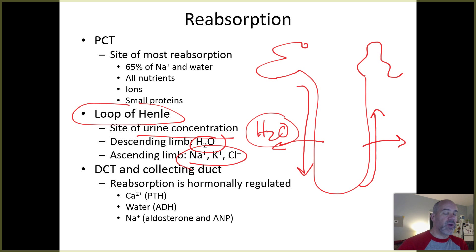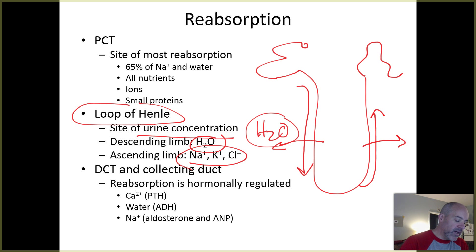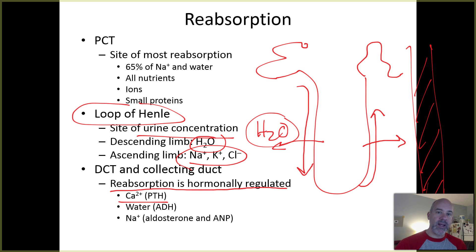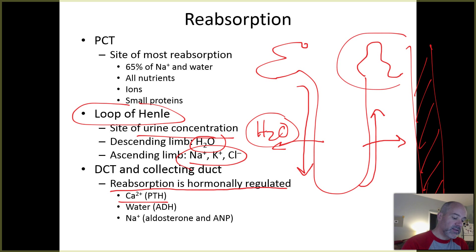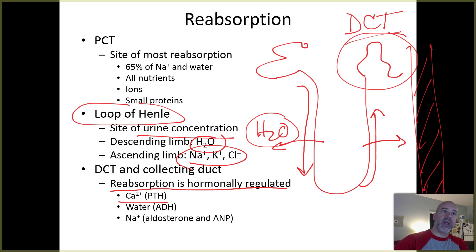In the distal convoluted tubule and collecting duct, reabsorption is hormonally regulated. For example, calcium — remember parathyroid hormone (PTH), which tries to increase calcium ion levels in your body fluids. Calcium homeostasis is absolutely crucial for bodily functions. PTH can tell cells in the distal convoluted tubule to transport calcium out of the developing urine and back into tissue fluids.